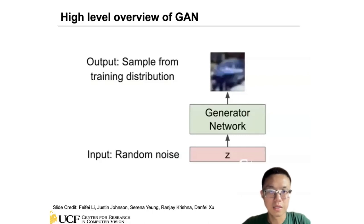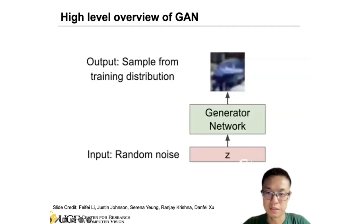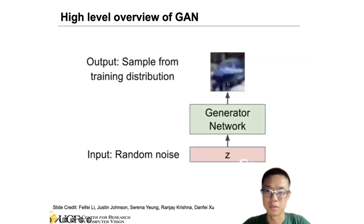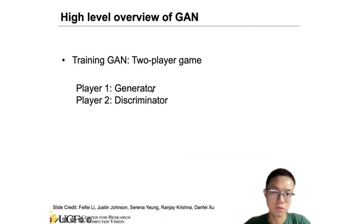Let's look at the high-level idea of GAN. The input is random noise z, which is fed into the generative network — a standard CNN architecture. The network generates a sample resembling the training distribution of realistic images. Training a GAN can be considered a two-player game: the generator and the discriminator.